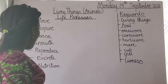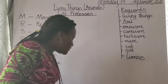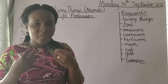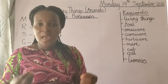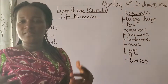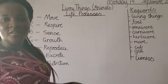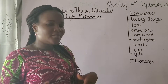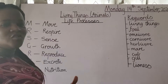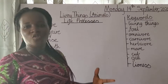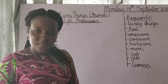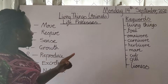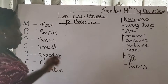Animals can feel, animals can see, animals can smell, animals can hear. So animals can do all these things — it also shows that animals are living things.